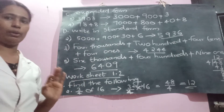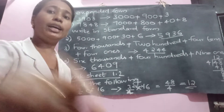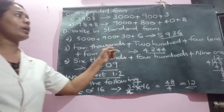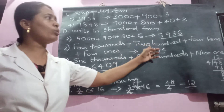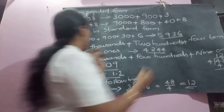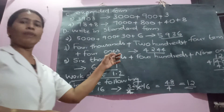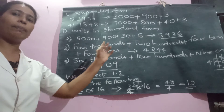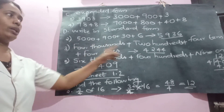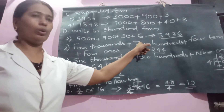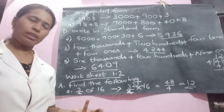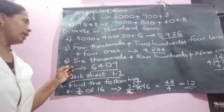The third question has words given: four thousand, two hundred, four tens, four ones. Avoid the place values and write the digits alone — 4, 2, 4, 4 — giving 4244.